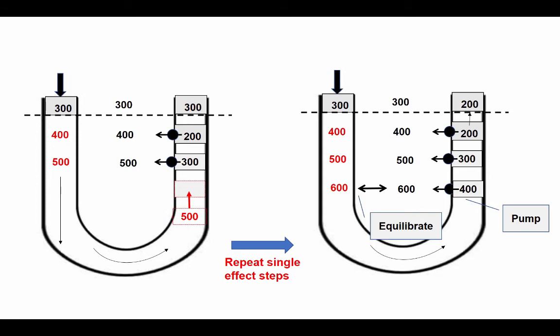Now we have a situation where the descending limb has an osmolality at this level of about 600 milliosmoles, the interstitium has an osmolality of 600 milliosmoles, and the ascending limb at this level is going to have an osmolality of 400 milliosmoles.